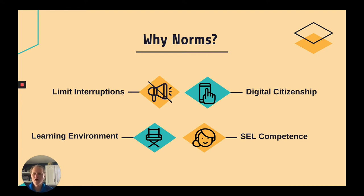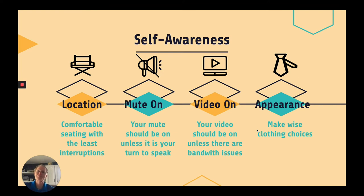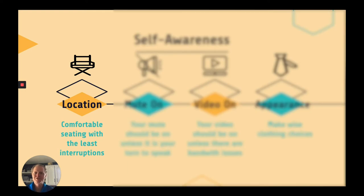Norms also help us connect to social emotional learning competencies. The first of these is self-awareness. As you're beginning this training, you need to find a good location in your home that's going to minimize interruptions and distractions. I would also suggest having a nice comfortable chair because you might be here for a while. Make sure that where you're seated and located in your home is going to be optimal for you to participate and focus in this learning experience.